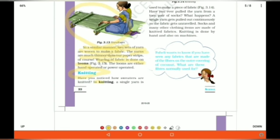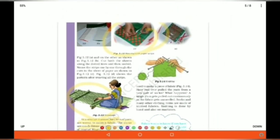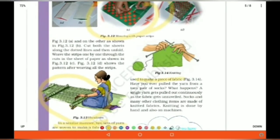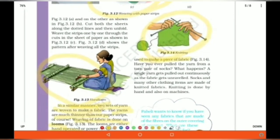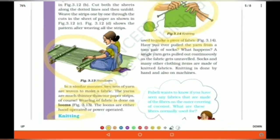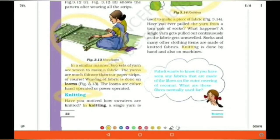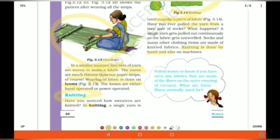The second step or second process is knitting. In knitting, a single yarn is used to make a piece of fabric. Like, our great-great-grandmothers used to do this. Right? Now, too, they do. Have you ever pulled a yarn from torn pair of socks? Yeah. Many of us do that. Right?